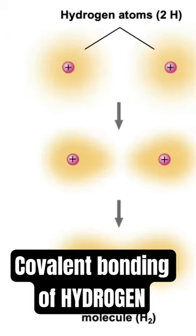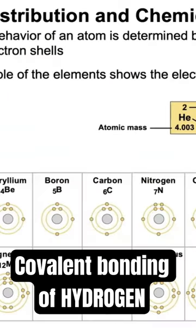Hydrogen has one proton and one electron. The yellow cloud represents the electron cloud. Looking back at our electron configuration table, hydrogen has one electron in its valence shell.